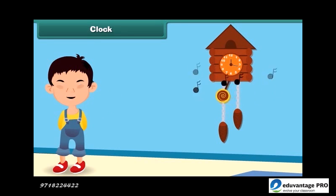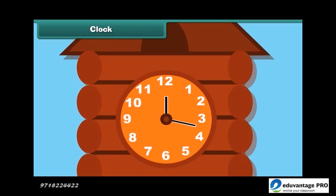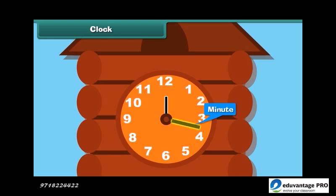The clock tells us the time. There are 12 equal divisions in a clock, named as 1, 2, 3, 4, 5, 6, 7, 8, 9, 10, 11, and 12. The clock has two hands. The longer hand is the minute hand whereas the shorter hand is the hour hand. The hour hand tells about the time in hours while the minute hand tells about the time in minutes.